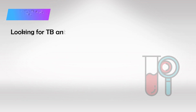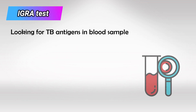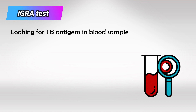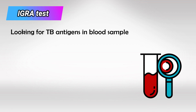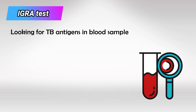The other test is the IGRA, or the immunoglobin release assay, and this basically takes a blood sample and looks for the TB antigens in the blood. If IGRA or PPD were once positive, they will always be positive.